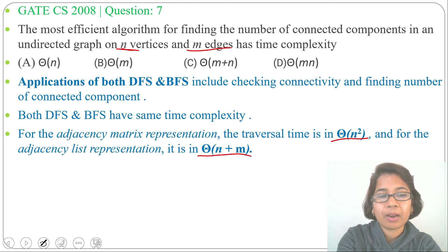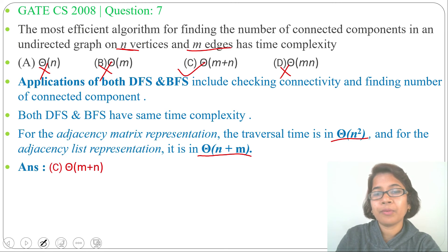Now check the options. Option A: Θ(n) - wrong. Option B: Θ(m) - wrong. Option C: Θ(m + n) - this is the time complexity of both DFS and BFS if the given graph is in adjacency list representation. And option D: Θ(m × n) - this is wrong. So the answer will be option C: Θ(m + n).